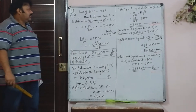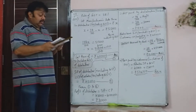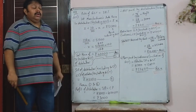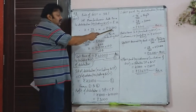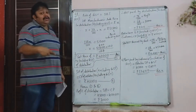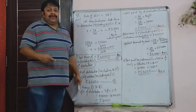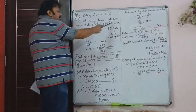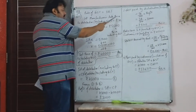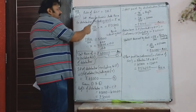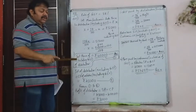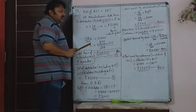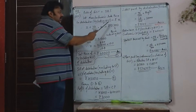We continue with question 10. A manufacturer sells a TV to a distributor at Rs. 51,200, but that is including tax — it includes the GST. So let the price without GST be X. X plus 28% of X equals 51,200.